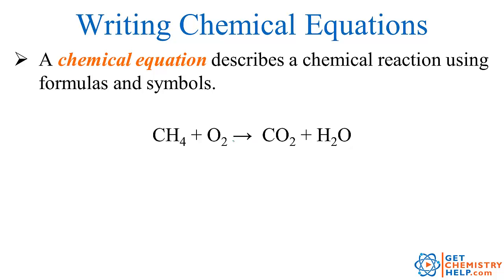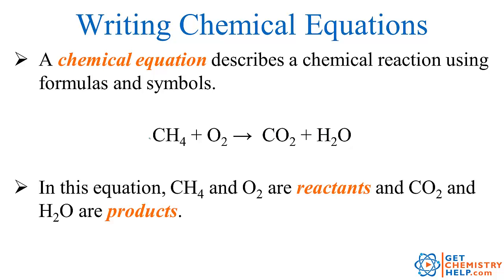Produces, or this arrow could mean yields or forms, carbon dioxide and water. Now the substances on the left hand side of the arrow, these are the ones that are reacting initially so we call these the reactants.